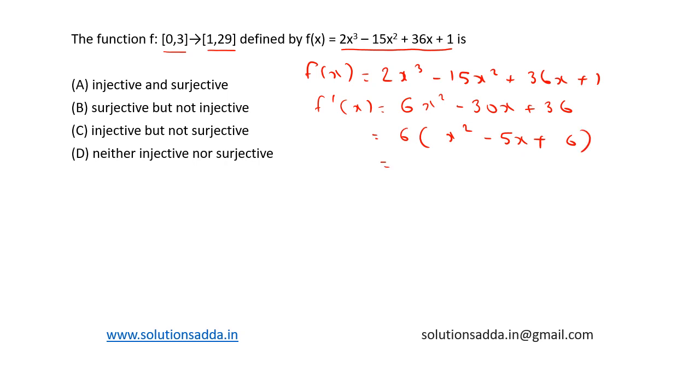This can be rewritten as 6(x - 2)(x - 3). These are the factors. Now f(x) has minima and maxima at x = 3 and 2 respectively.